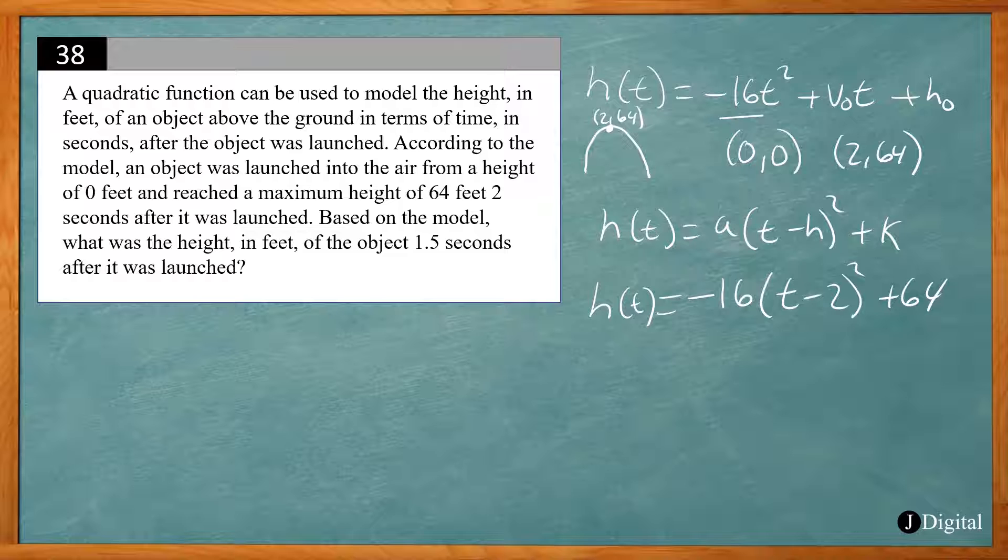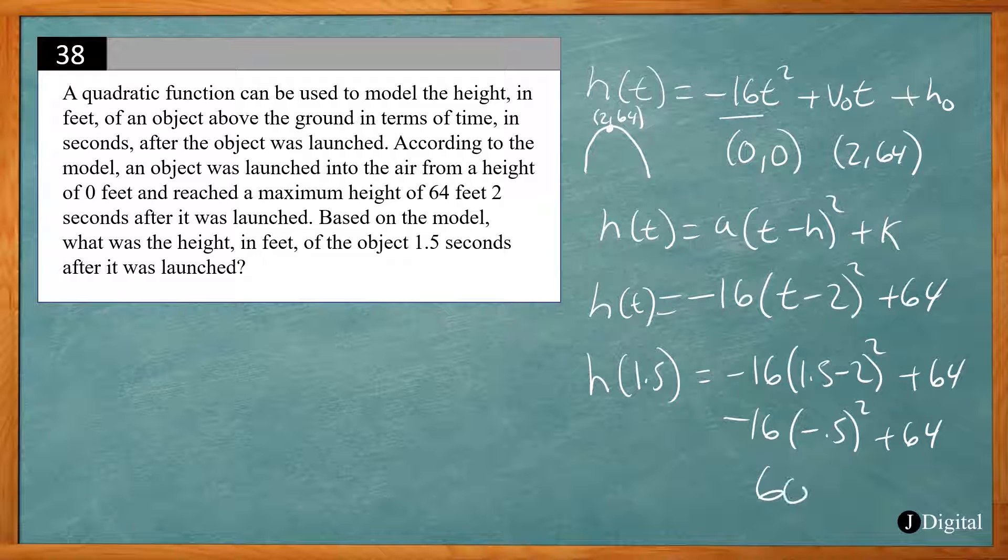If you want to find the height after 1.5 seconds, that's going to be our t value. So h(1.5) will equal negative 16 times (1.5 - 2)² plus 64, or negative 16 times (-0.5)² plus 64. If you enter this into your calculator, that will give us 60. Okay, so after 1.5 seconds after its launch, it will be at a height of 60 feet.